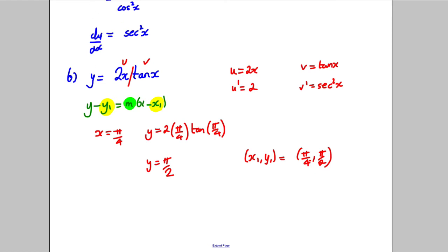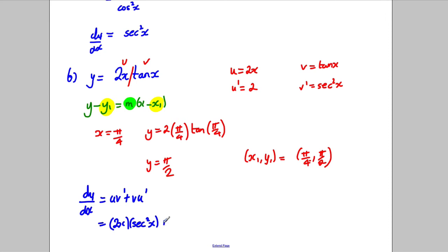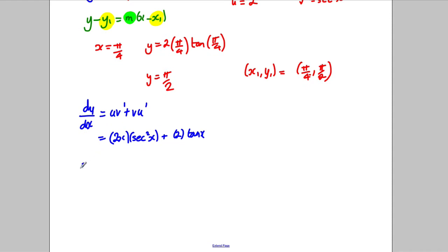Now we find the gradient. Using the product rule, dy/dx equals u·v dash plus v·u dash, which gives 2x·sec squared x plus tan x·2. Factorising out the 2, dy/dx equals 2(x·sec squared x plus tan x).